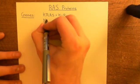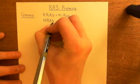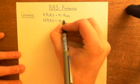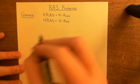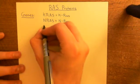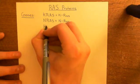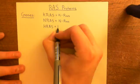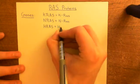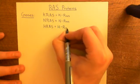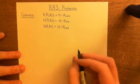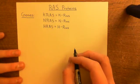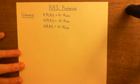Then there's also the NRAS gene, which can also be written as N-RAS with capital N and R and lowercase A and S. And finally, there's also the HRAS gene, which can also be written in both styles — either all capitals, or with just the H and the R in capitals and a dash between the H and the R. So these are the three genes that you have for these RAS proteins.